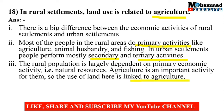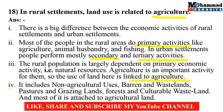Point number 4: It includes non-agricultural uses — barren and wastelands, pasture and grazing lands, forest and culturable wastelands — and most of it is attached to agricultural land. जितने भी land uses हैं rural settlements के — non-agricultural uses, barren and wastelands, pasture, grazing land — ये सब ज़्यादा तर agricultural land से attach होते हैं। इसलिए land use agriculture से related होता है rural settlements का।